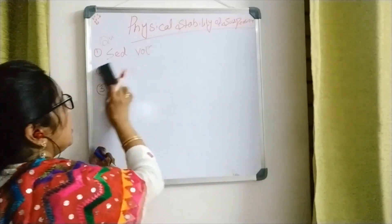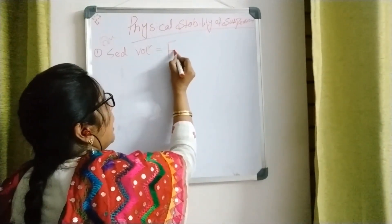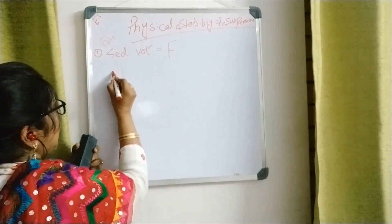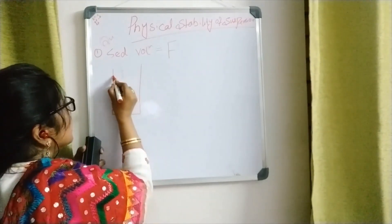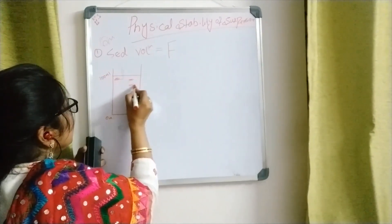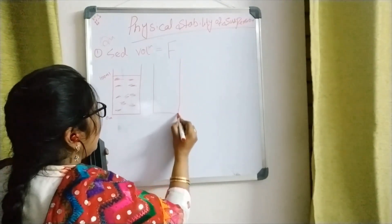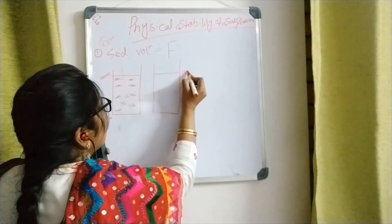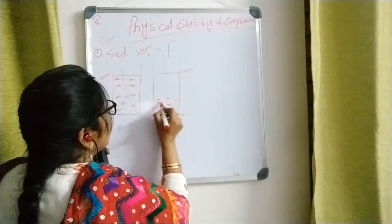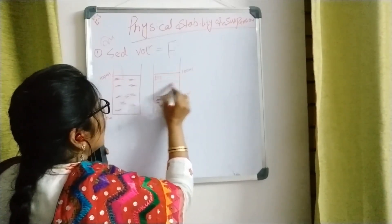One by one I will explain. First: sedimentation volume. This sedimentation volume is usually designated by F, capital F. For example, consider one container in which we have a suspension — say 100 ml at the top and 0 ml at the bottom. And one more suspension we are having, again 100 ml here and 0 ml at the bottom. In the second one, the settling of particles has taken place up to 60 ml, and the remaining will be clear liquid.